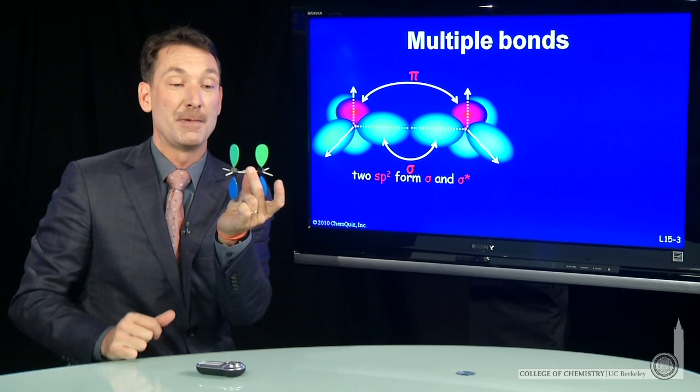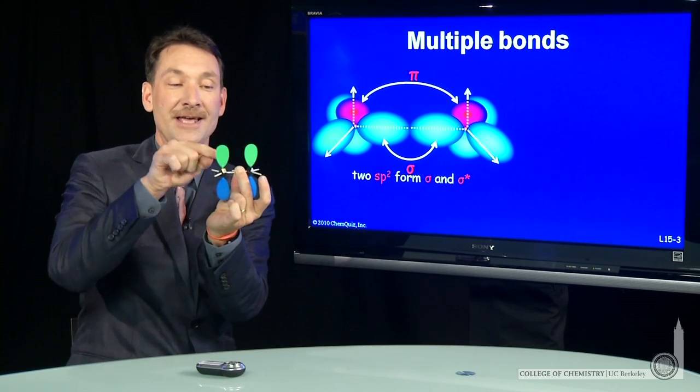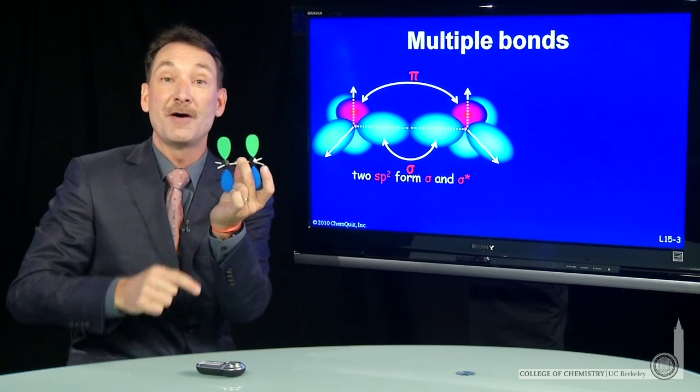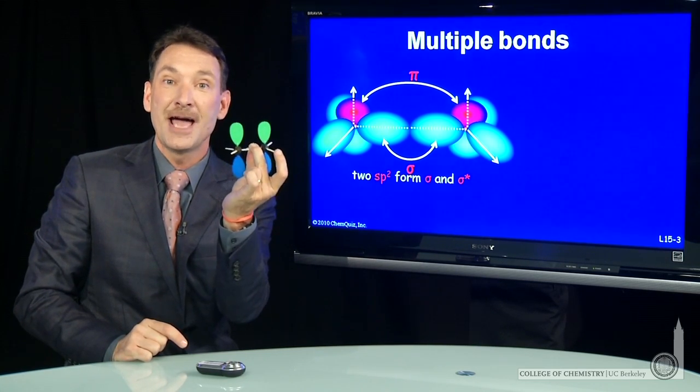There's the sp sigma bond. And now the p orbitals can overlap and form a bond above and below the axis, a second bond. So I'll have a sigma and a pi bond.